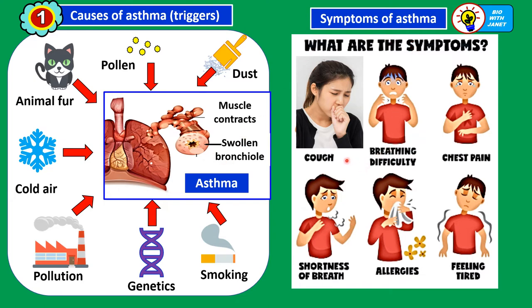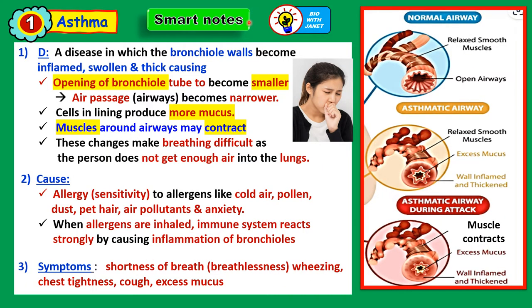Symptoms of asthma include coughing, breathing difficulty, chest pain, shortness of breath, allergy as a trigger leading to asthma, and fatigue. Here are the smart notes for asthma: asthma is a disease in which the bronchial walls become inflamed, swollen, and thick, causing the opening of the bronchial tube to become smaller and the air passage narrower. Cells in the lining may produce more mucus, and smooth muscles surrounding the bronchial may contract. These changes make breathing difficult and the person does not get enough air into the lungs. The cause is allergy to allergens, which triggers the immune system to cause inflammation of the bronchial.